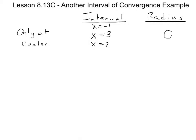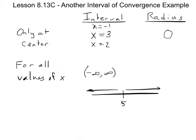So that's the first thing that can happen. It can converge only at the center. The next thing that can happen is it can converge for all values of x. And I think that was actually what we saw in the first example in the previous video. So what does the interval look like for that one? Well, it converges for all values of x. You say it's from negative infinity to positive infinity. And similarly, what's the radius of convergence?